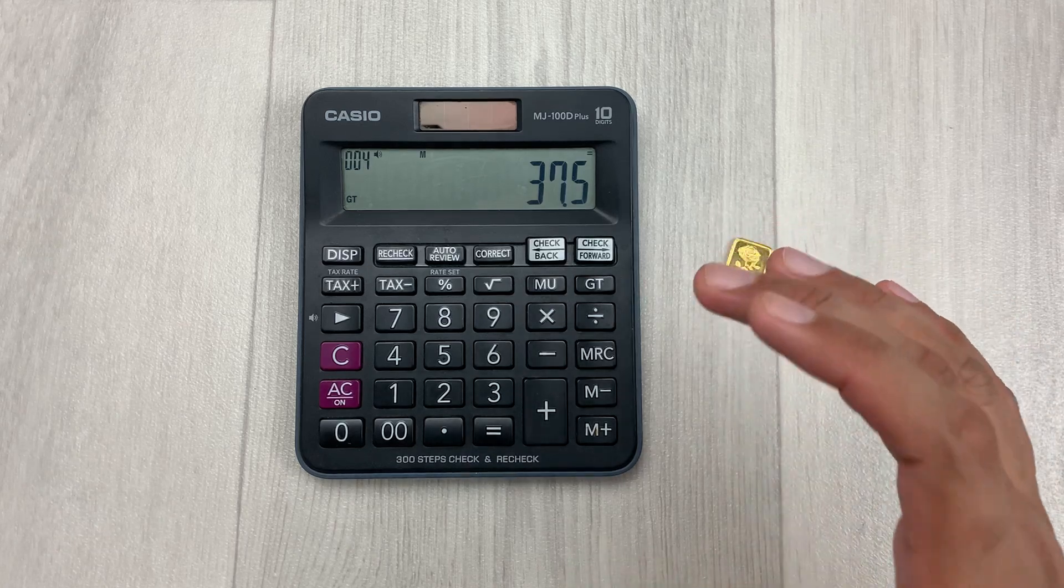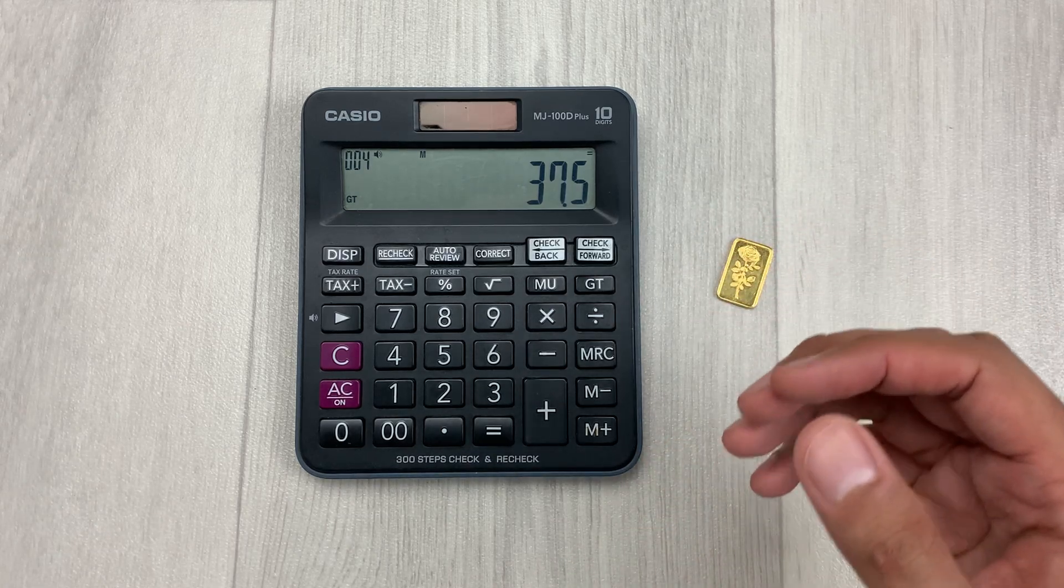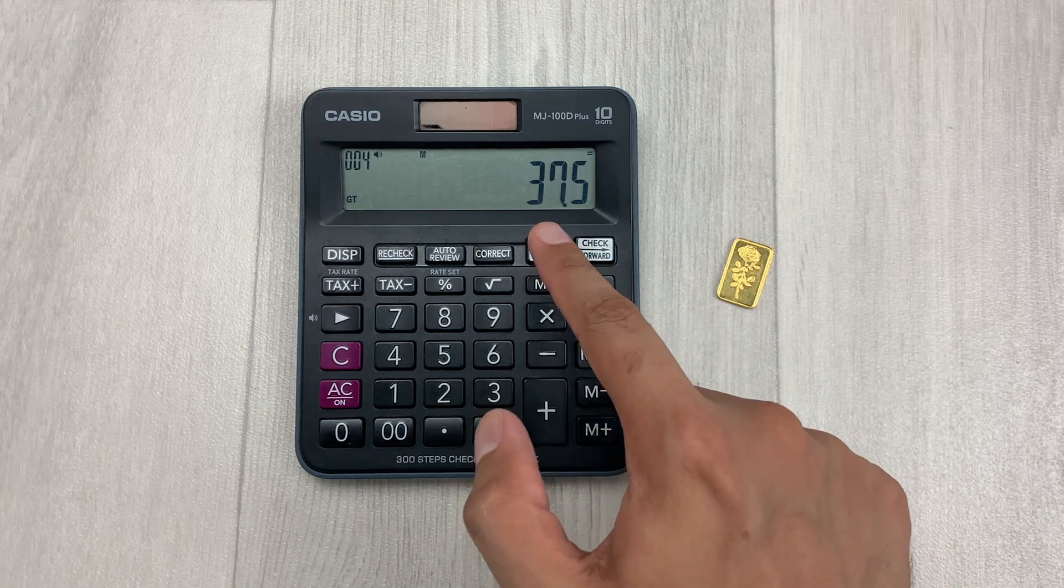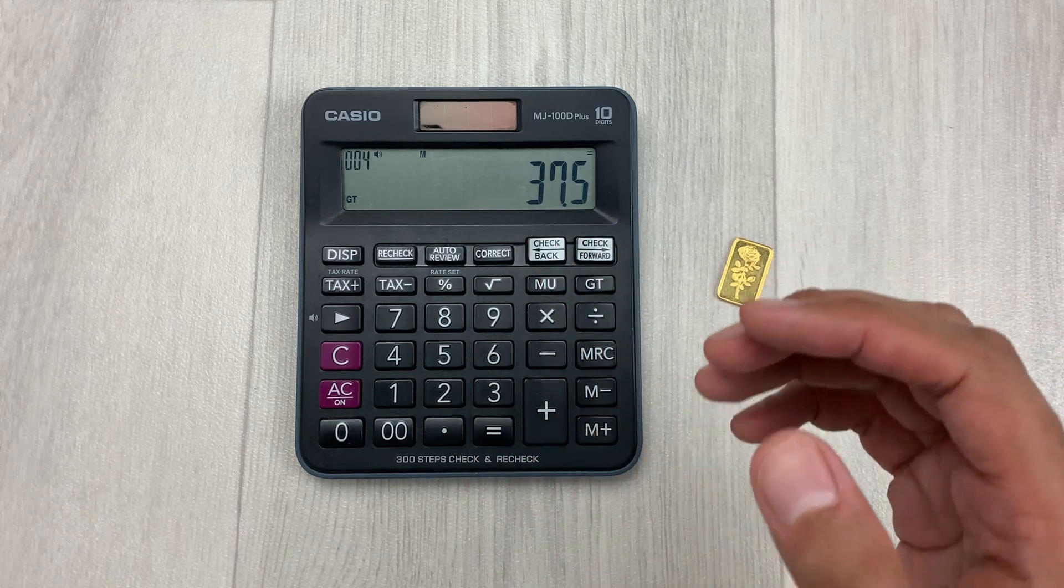So here is the final answer. The nine carats of gold jewelry contains 37.5 percent of pure gold and the remaining 62.5 percent is other metals.